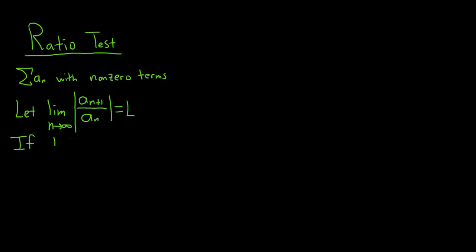If L is less than 1, the series converges absolutely. If L is bigger than 1, we have divergence. And if L is equal to 1, the test fails, so we have no information. So that's the ratio test.